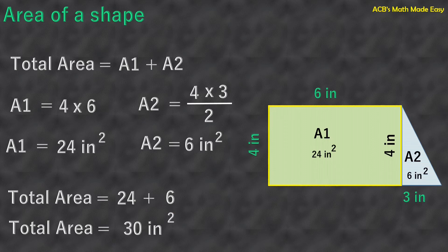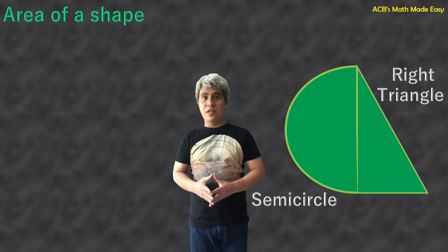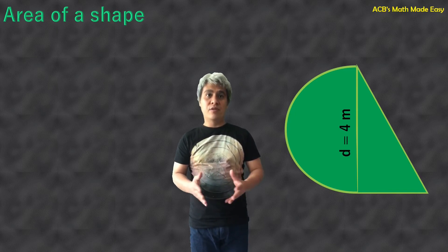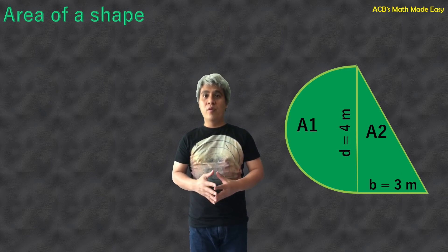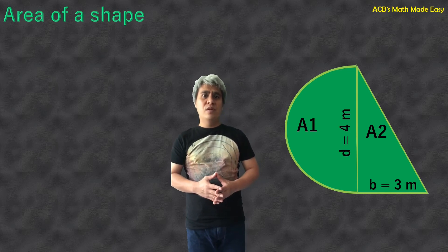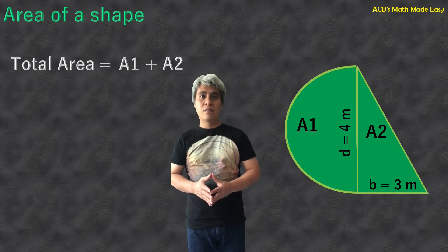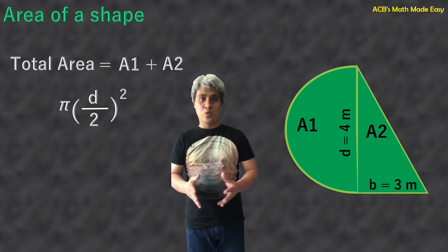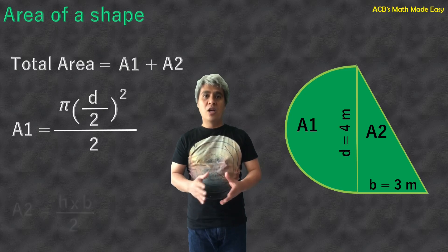Let us solve our next example. This will be our shape — a combination of a semicircle, which is half of a circle, and a right triangle. The diameter of the circle is 4 meter, and the base of the triangle is 3 meter. Area 1 will be the area of the semicircle, and Area 2 will be the right triangle. The area of the shape is the sum of the area of the semicircle and the right triangle — Area 1 plus Area 2. The formula for the area of a circle is pi times (diameter over 2) squared, and since it is half of a circle, we divide it by 2. This is also the formula for the right triangle.